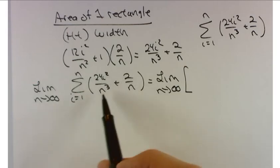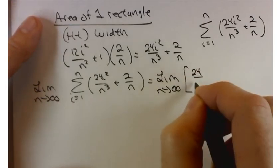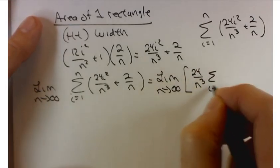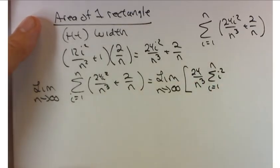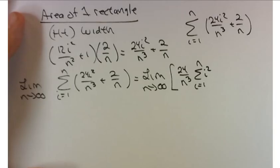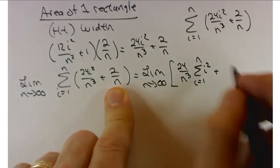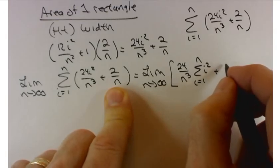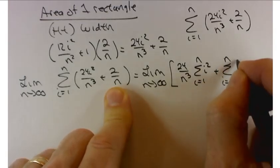But within that first sum, there's a lot of stuff that doesn't depend on i. So the 24 and the n³ can come out in front. So 24 over n³ times the sum from i equals 1 to n of i² plus, this one's friendly enough that we'll just leave it alone, the sum from i equals 1 to n of 2 over n.